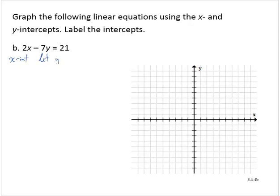We let y equal 0. 2x minus 7 times 0 equals 21. 7 times 0 is 0. 2x minus 0 is 2x. So 2x equals 21.